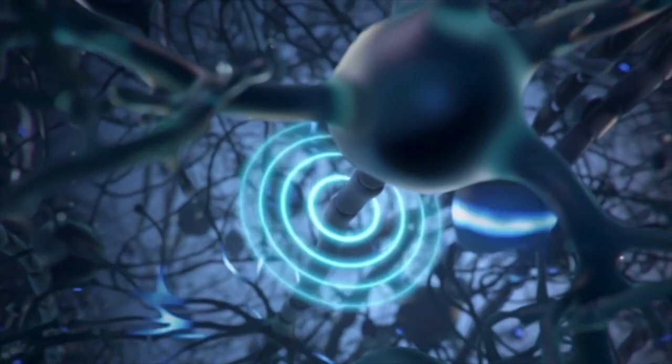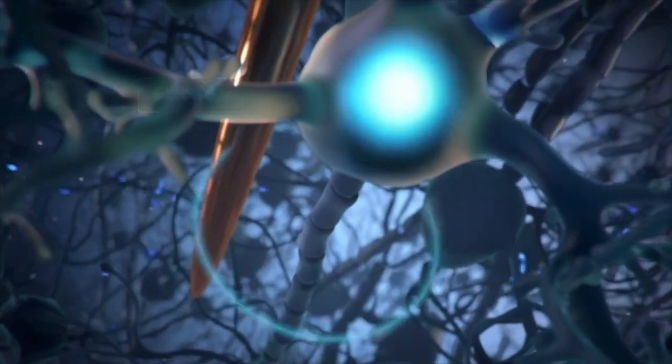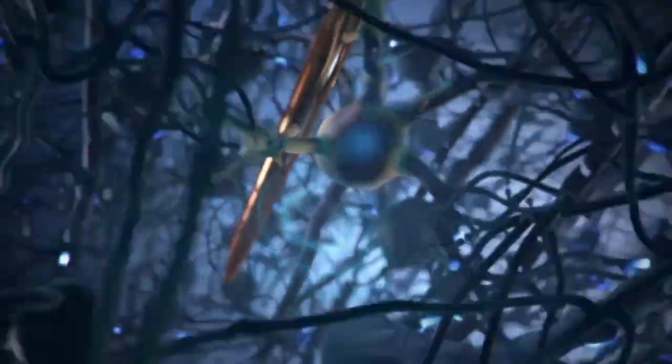Action potentials produce an electric field that spreads from the neuron and can be detected by placing electrodes nearby, allowing recording of the information represented by a neuron.